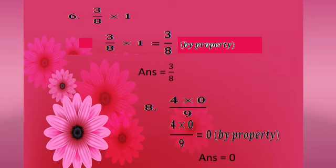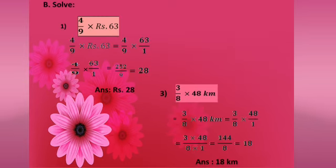Next sum: 4 into 0 by 9. By property, any number multiplied by 0 gives 0. So 4 into 0 is 0, and the denominator is 9, giving 0 by 9, which equals 0. The answer is 0.